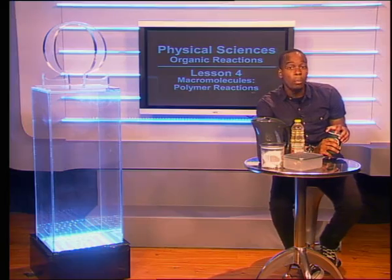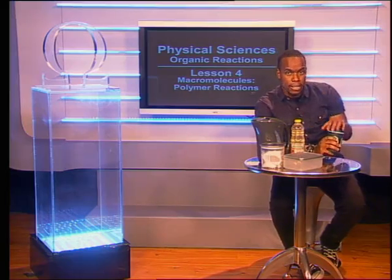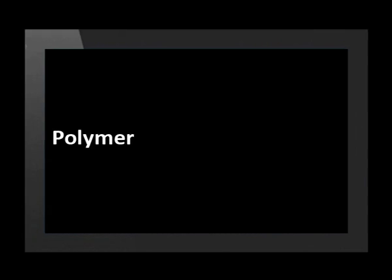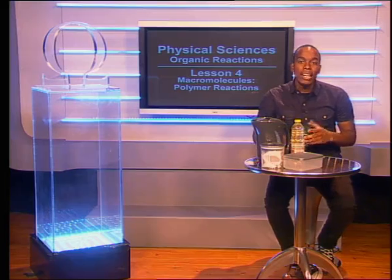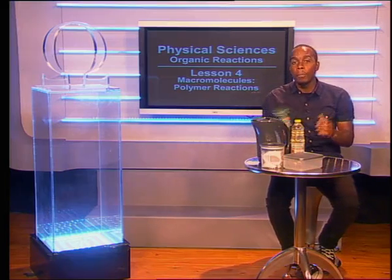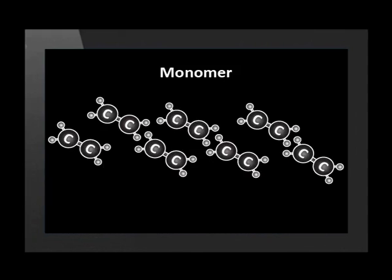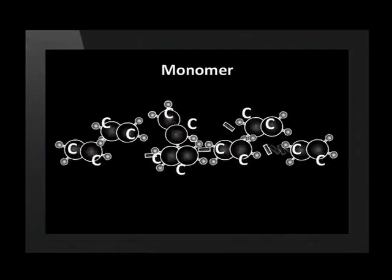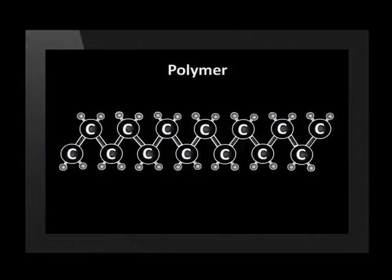Before we make some polymers, let's see what a polymer is. The word polymer comes from Greek and means many parts. So let's look and see how these many parts come together. When ethene joins together many times, we make polyethene. We call ethene a monomer. You may remember this example from the lesson on addition. The big molecule is called a polymer.